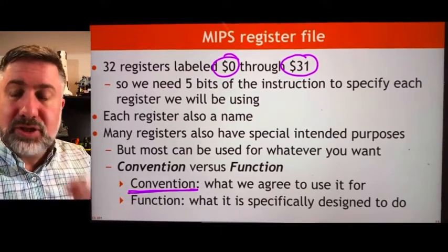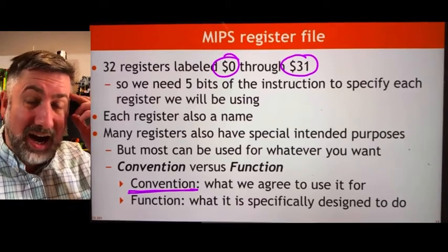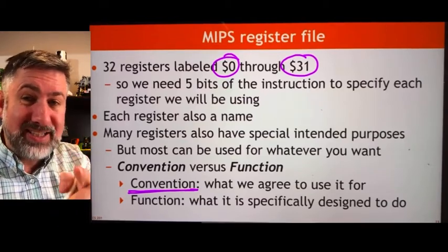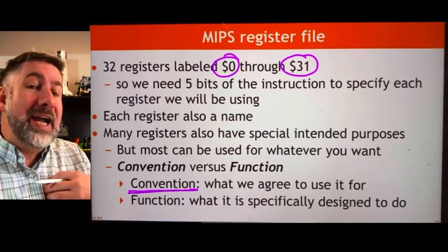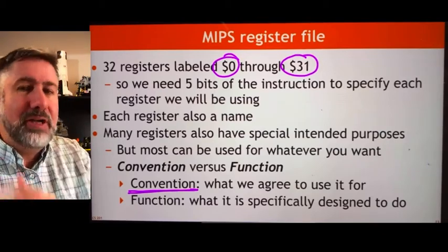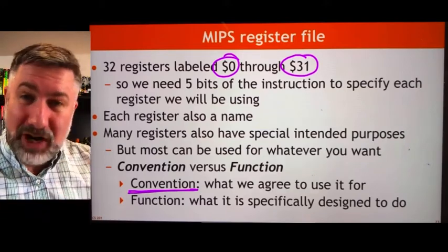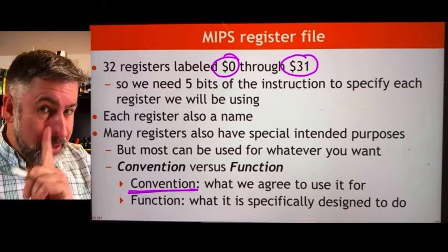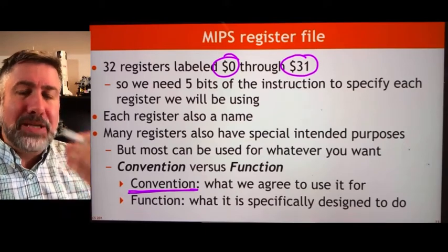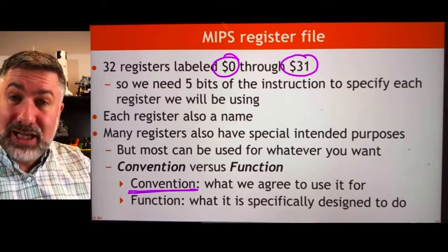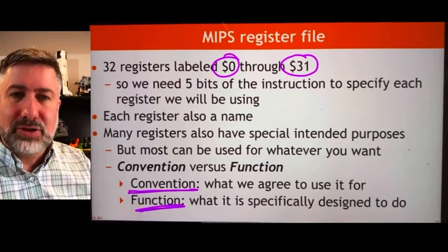If we write code with a specific register, somebody else looking at our code will know that because you used register S, when passing this to another subroutine, they have to be responsible for saving its content before the subroutine initiates. We'll learn subroutines later. The important thing is that registers have names, and those names imply higher-level functions even though the lower-level functionality of the register is identical.